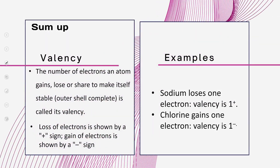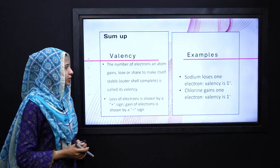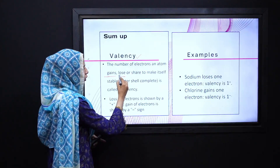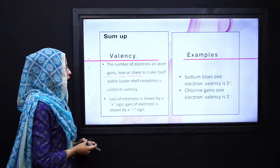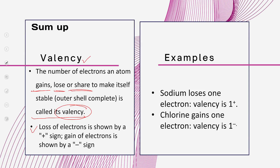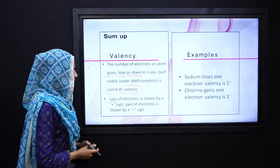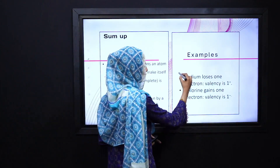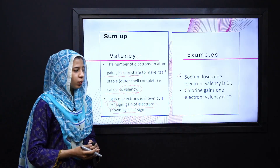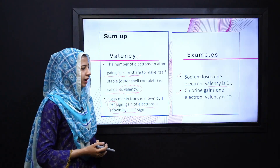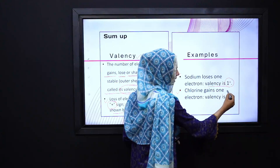Ab hum move karte hain apne summary ki taraf. Aaj ke lecture ke andar humne ek bahut important term ko study kiya, that is valency. Valency is basically the number of electrons an atom gains, loses, or shares to make itself stable. Humne is term ki representation ki baat ki toh humne kaha ke loss of electrons ko hum positive sign se show karenge, jabke gain of electrons ko we can represent by a negative sign. Furthermore, we discussed the example of sodium chloride, in which sodium loses its one electron and attains the valency of one plus, whereas chlorine gains one electron and attains the valency of one minus.